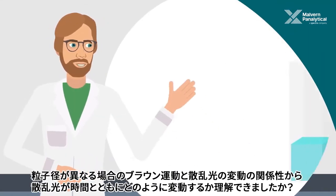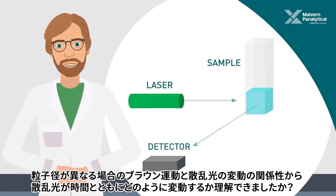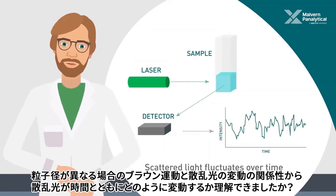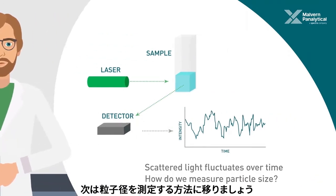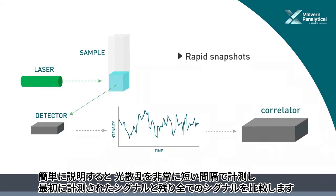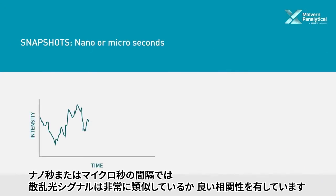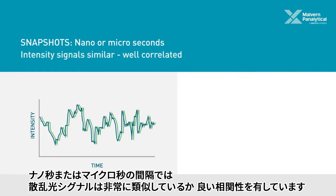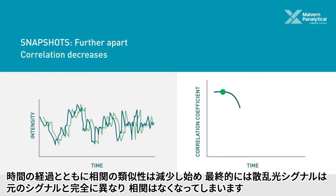So we've explained how Brownian motion affects dispersed particles of different sizes, and we've established how the scattered light will fluctuate over time. Now let's move on to explain how we measure particle size using this information. The intensity signals are very similar, or well correlated, but when we look at snapshots which are further apart in time, the similarity, or correlation, begins to decrease.